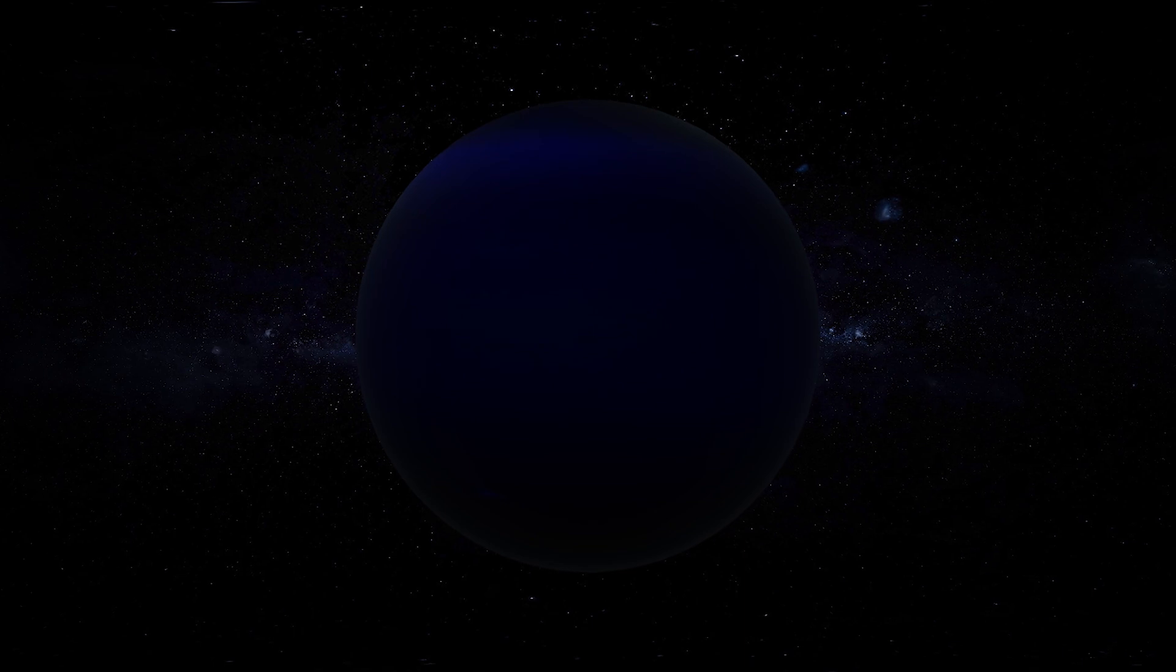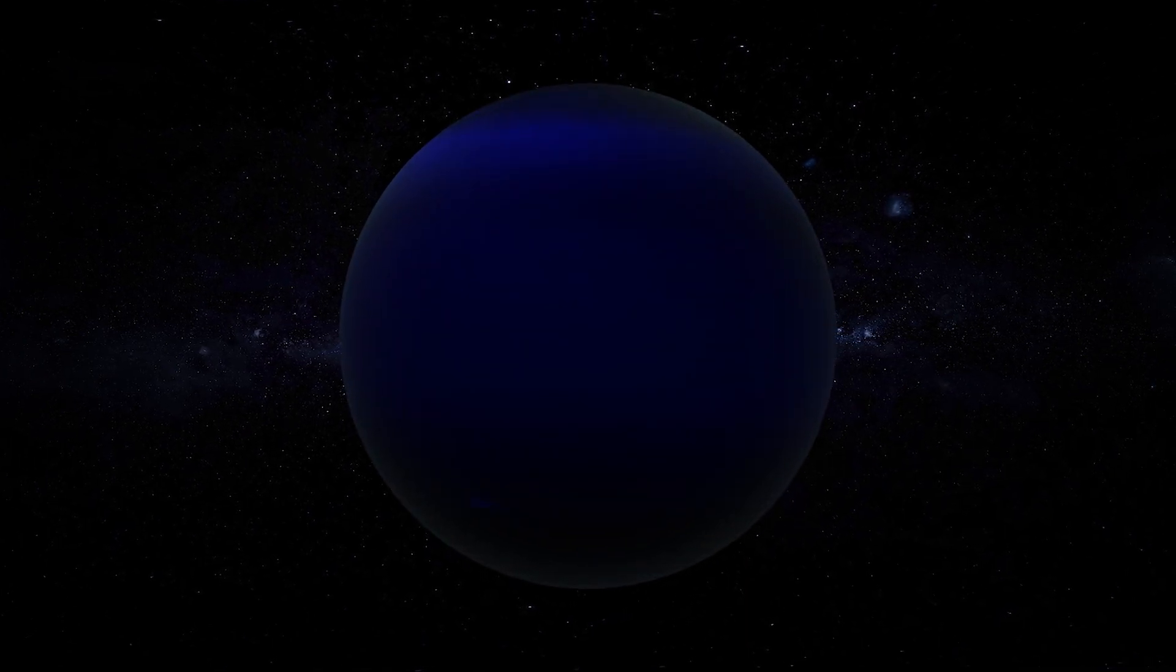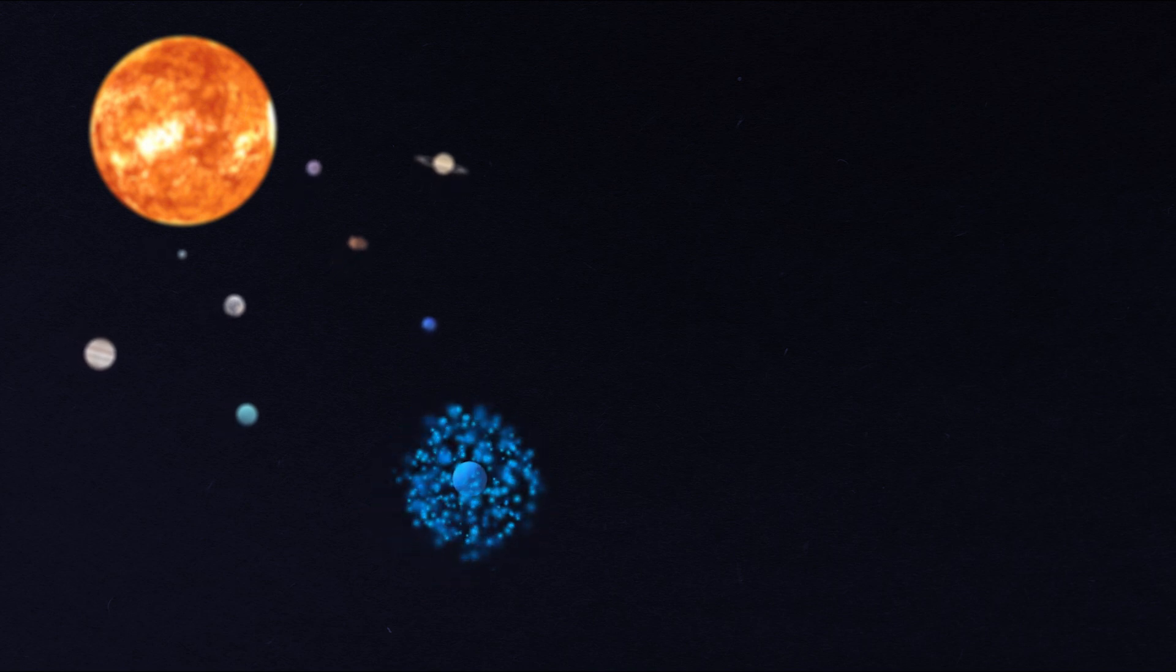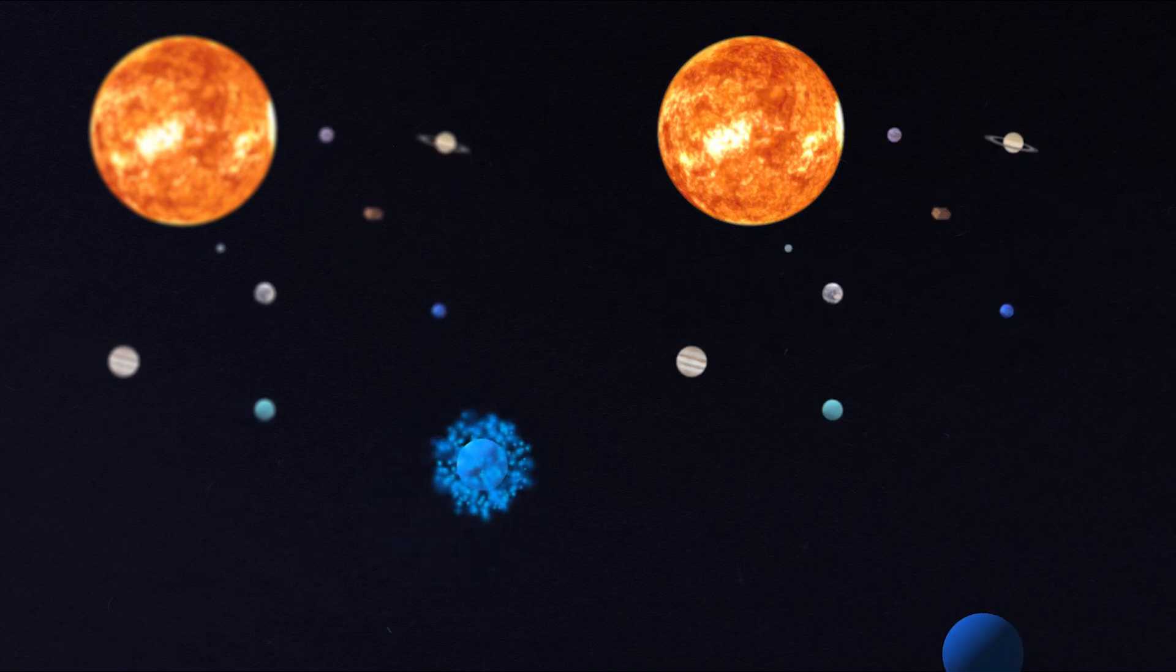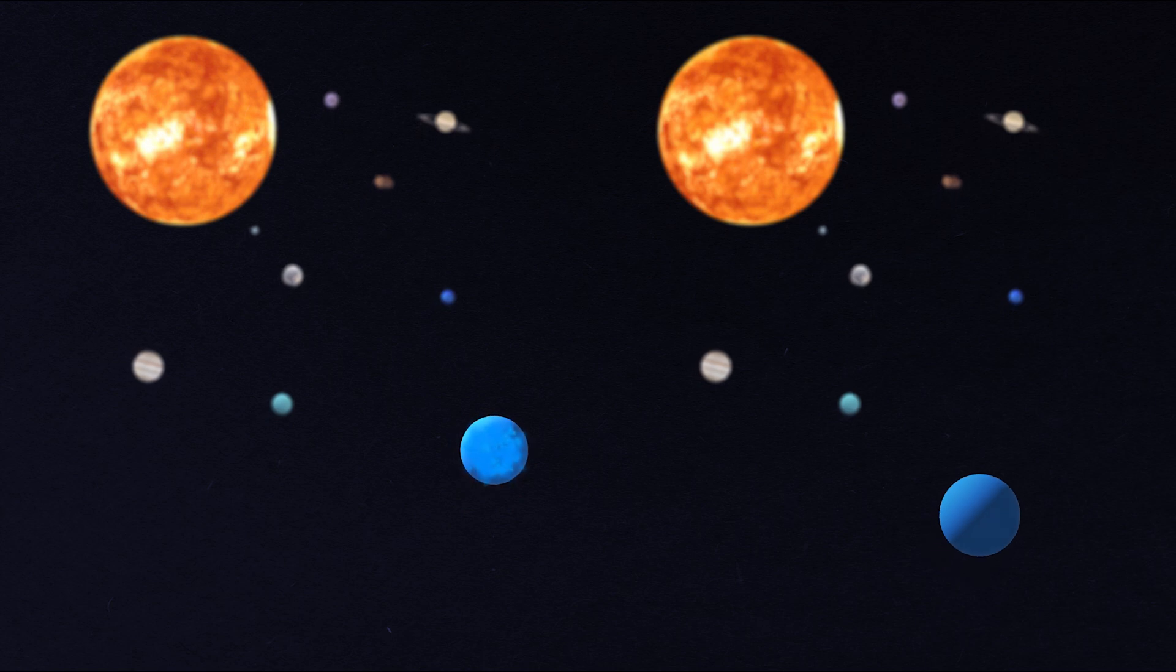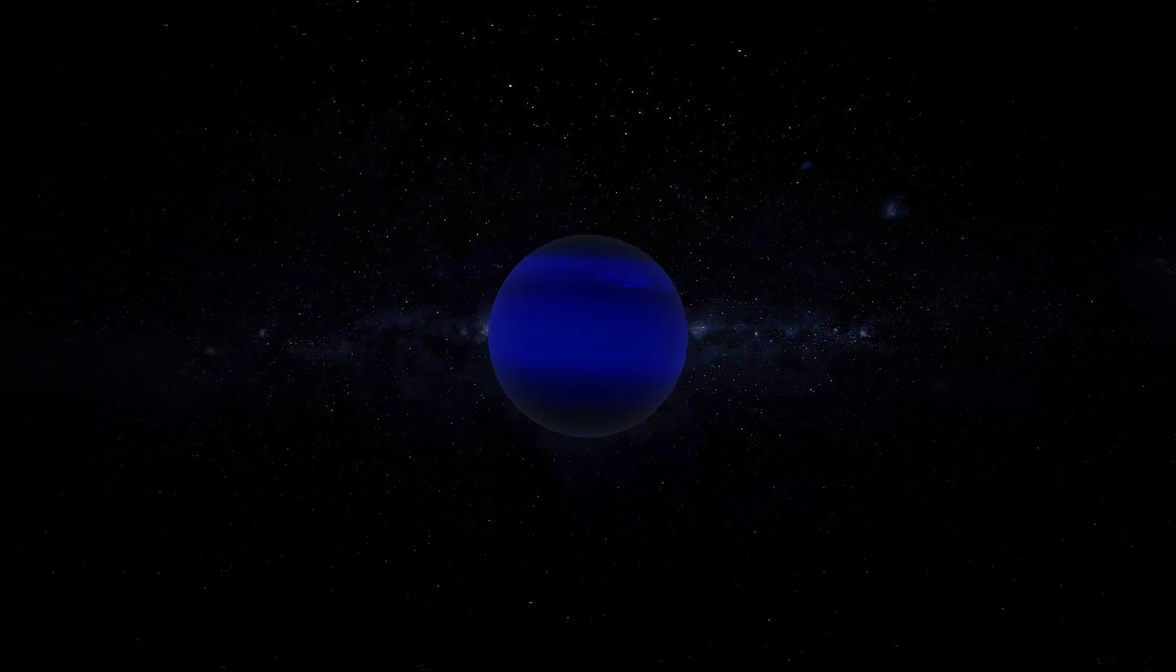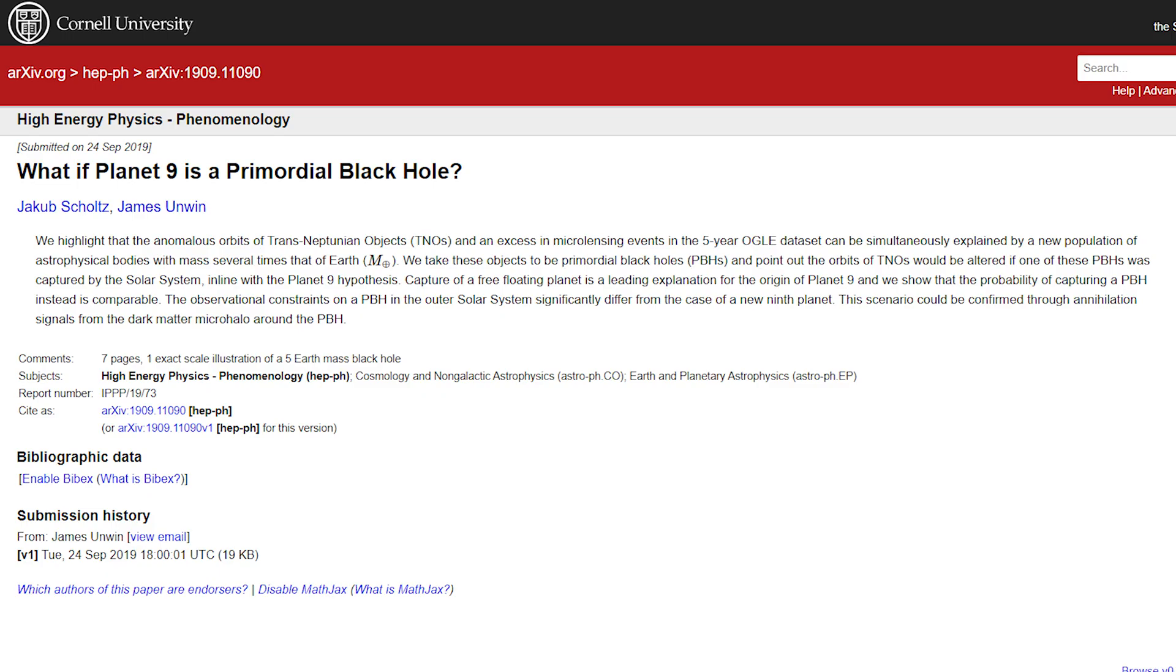There are several speculations about the nature of this Planet Nine. It could, of course, be a planet similar to other known planets, either directly formed in our solar system or captured from outside. A more exotic suggestion is that this object is actually a black hole, and not a simple one, but primordial. Let's clarify this last point.